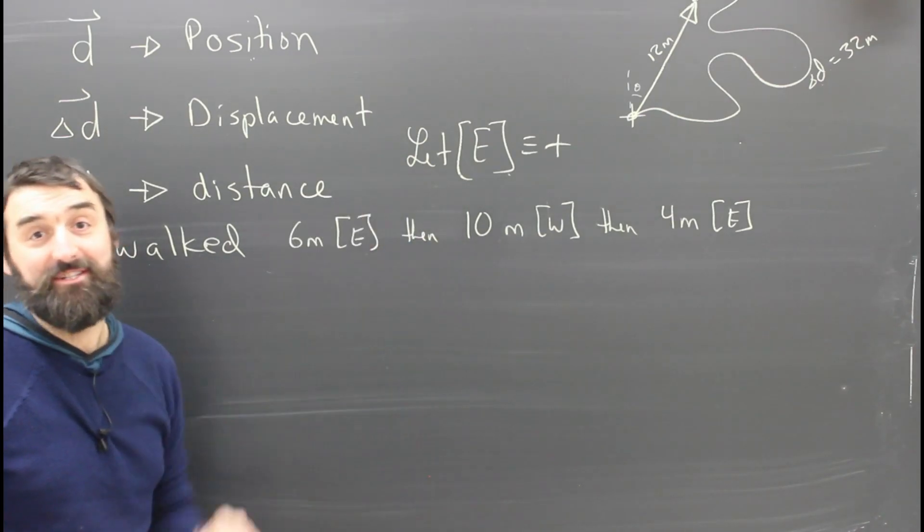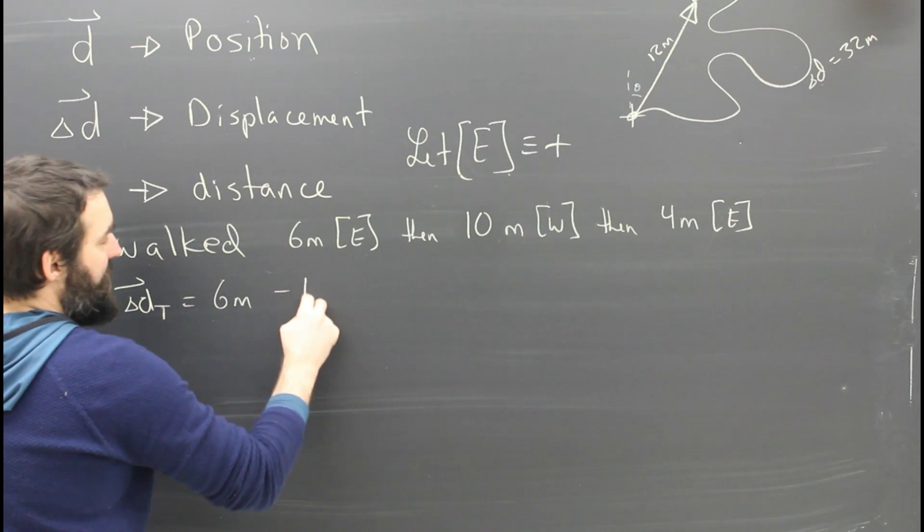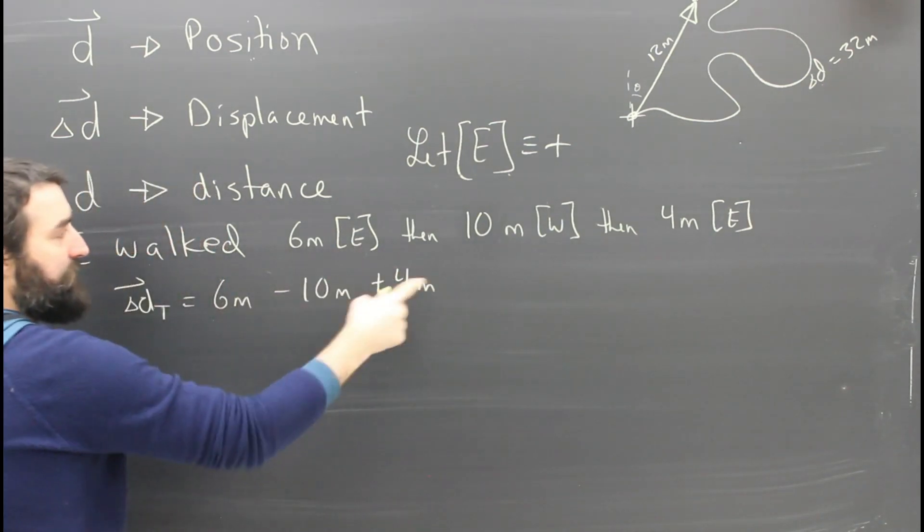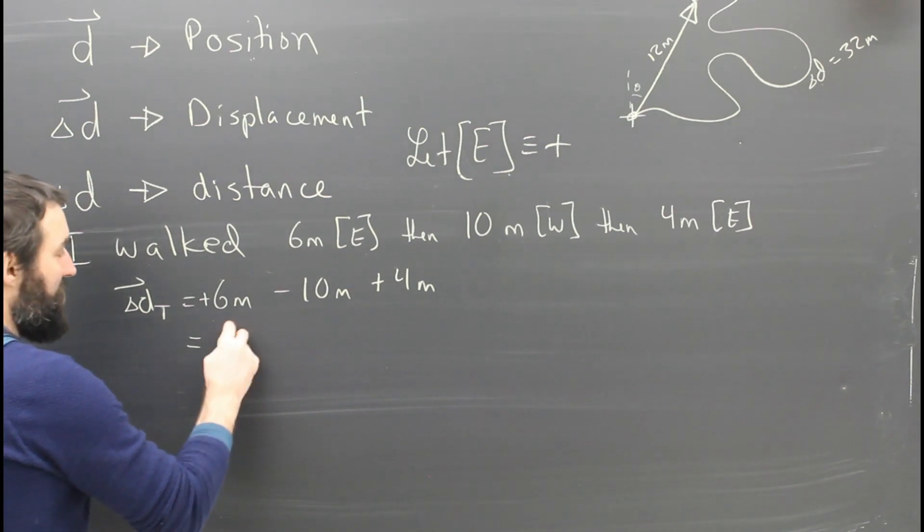Same situation. I'm still letting east be positive. My total displacement is going to be six meters minus 10 meters plus four meters. East is plus, west is minus. I can put the plus here in front if I want, but I don't have to. Six minus 10 is negative four plus four is zero meters.